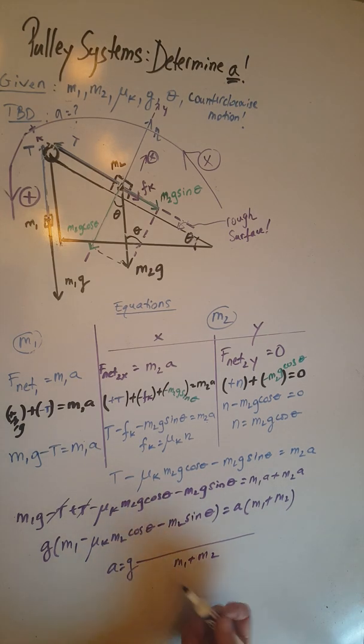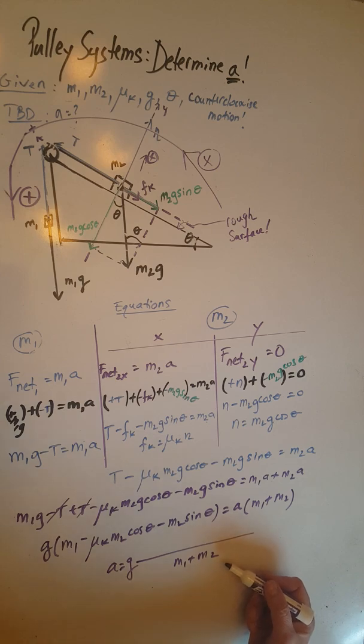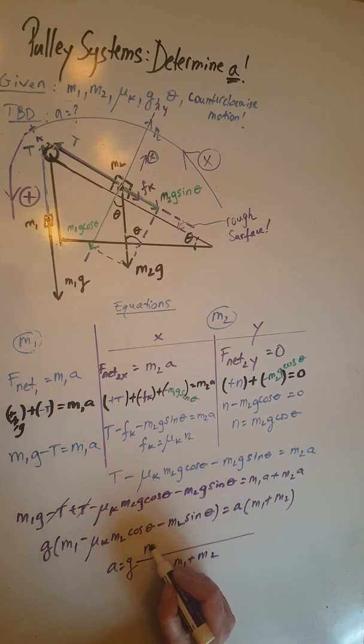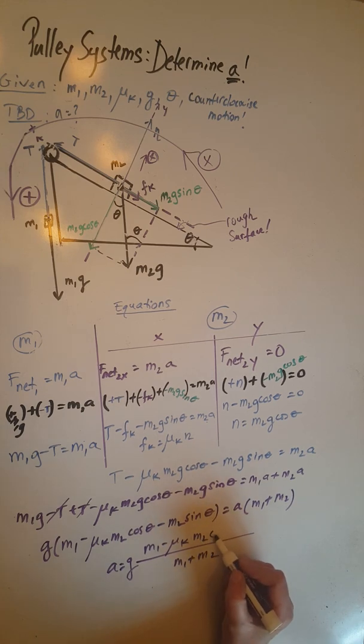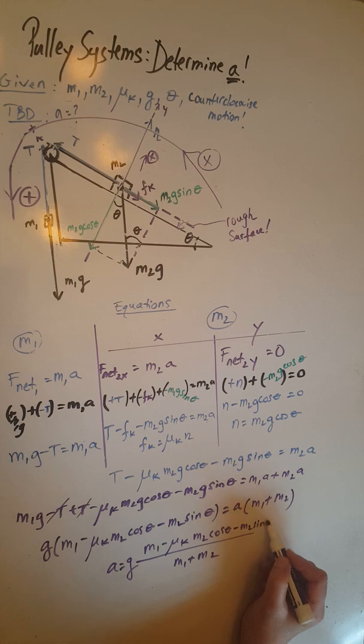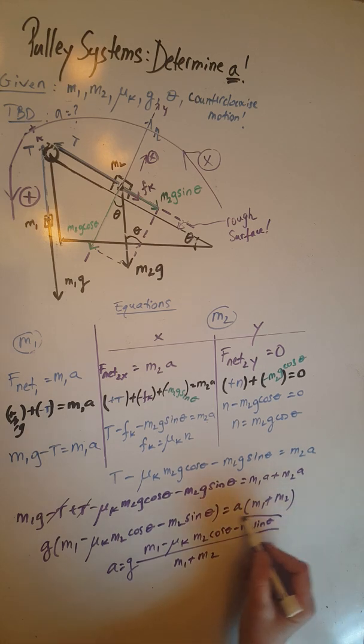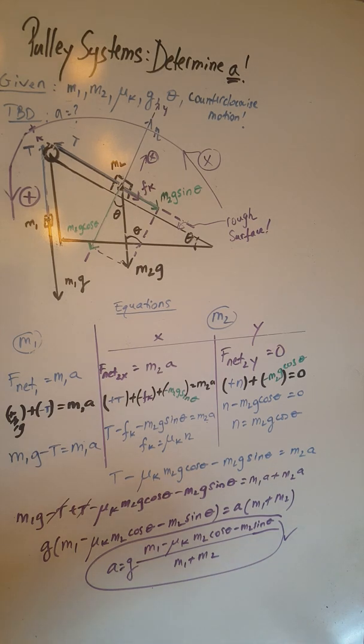And then to solve for a, we divide both sides by m1 plus m2, which is going to give me a equals g, fraction bar, in the bottom of the fraction m1 plus m2, and in the top m1 minus mu k m2 cosine theta minus m2 sine theta. Circle that.